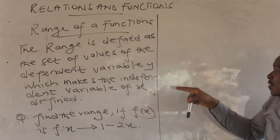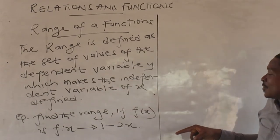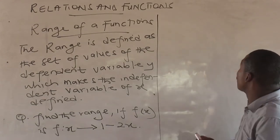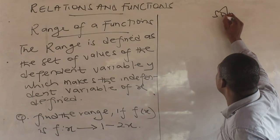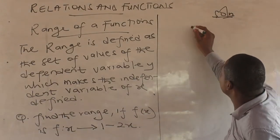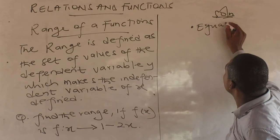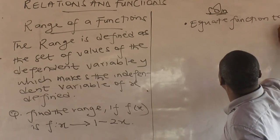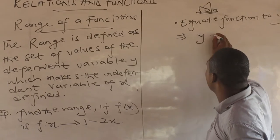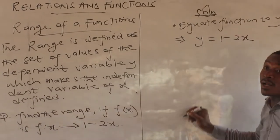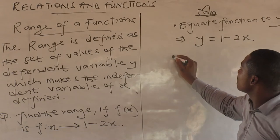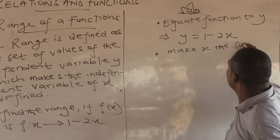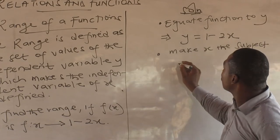So how do we solve range problems? You first equate the function to y — that's the first step. So I have y equals one minus two x. The next step is to make x the subject.